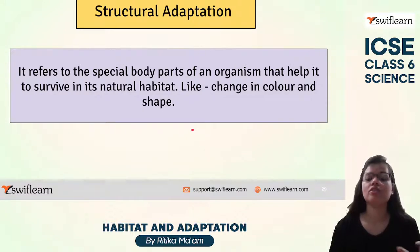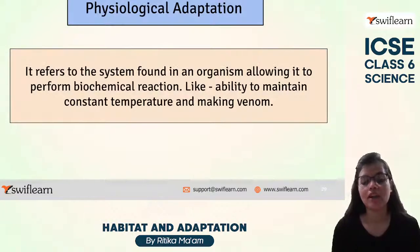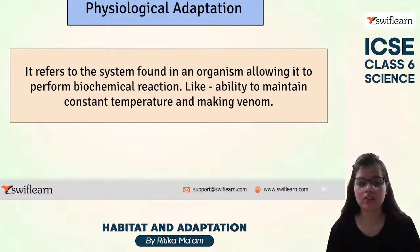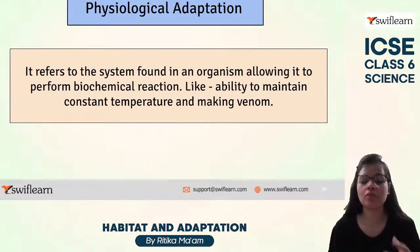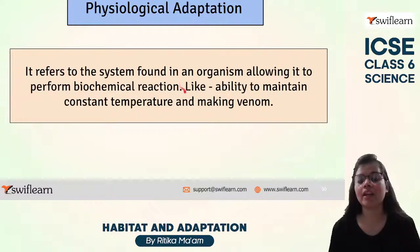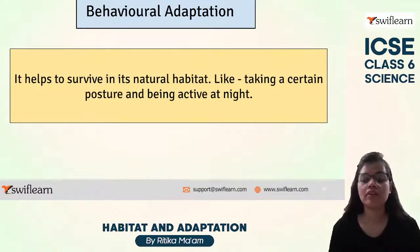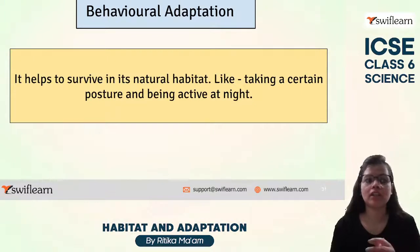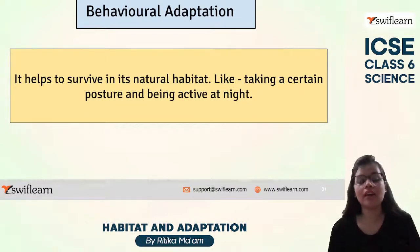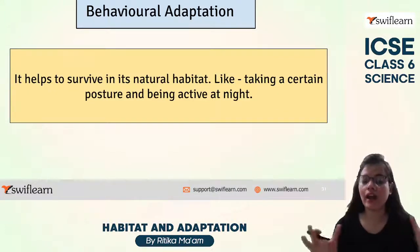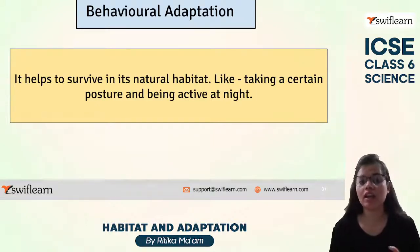Physiological adaptation is related to biochemical reactions — a system found in an organism that allows it to perform certain biochemical processes, like the ability to maintain a constant body temperature or to produce venom. Behavioral adaptation refers to changes in behavior that help an organism survive in its natural habitat, like nocturnal creatures that are active at night, or animals that take up certain body postures for survival.